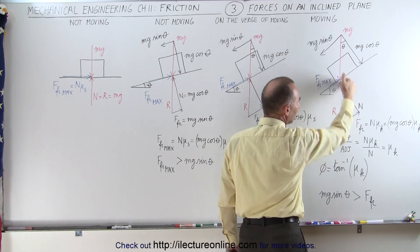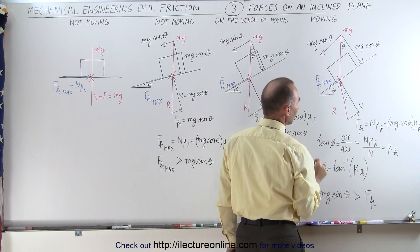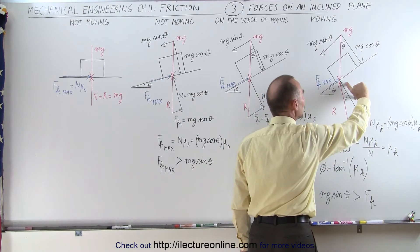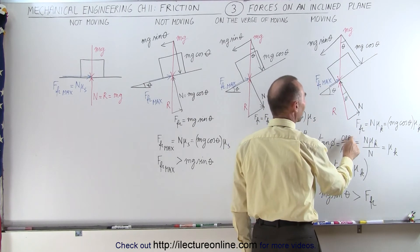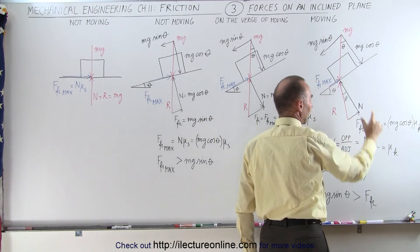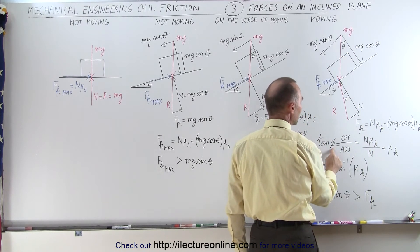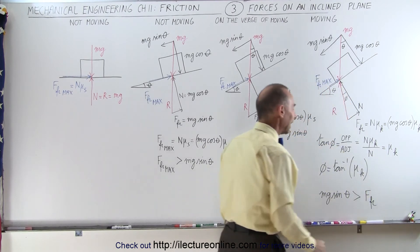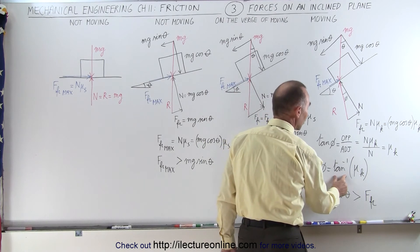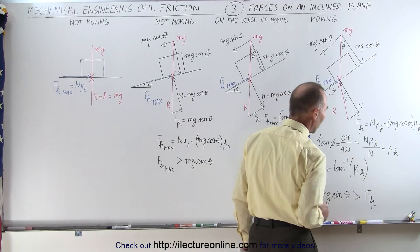To find the angle between the normal force and the reaction force — let's call this angle phi — the tangent of phi equals the ratio of the opposite side to the adjacent side. The opposite side is the friction force, which is the normal force times mu sub k, and the adjacent side is the normal force. Canceling out the normal forces, the tangent of phi equals the coefficient of kinetic friction. To find the angle, we take the inverse tangent of the coefficient of kinetic friction.